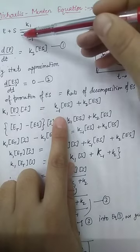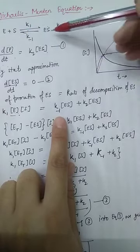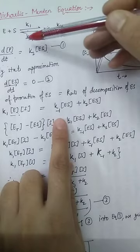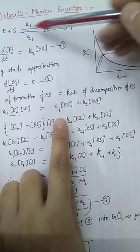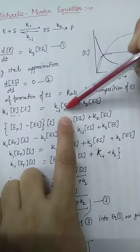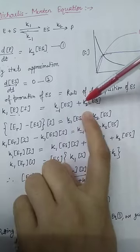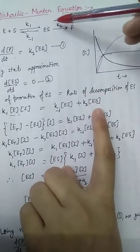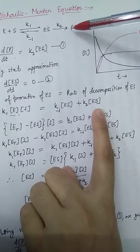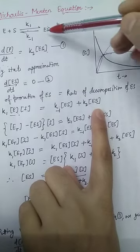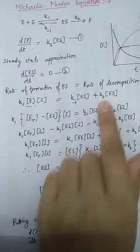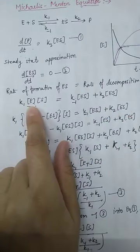This is set equal to the rate of decomposition of the enzyme-substrate complex. The ES complex decomposes in two ways: the backward reaction and the second forward step. The rate of the backward reaction is K_inverse times [ES], and the rate of the second step is K2 times [ES], so we write K_inverse[ES] plus K2[ES] on the right-hand side.